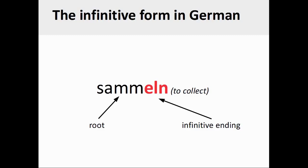This is the infinitive form that you will always find in German dictionaries. The verb you see on the screen, for example, sammeln, meaning 'to collect or gather,' has the verb root sammel and the infinitive ending -n.